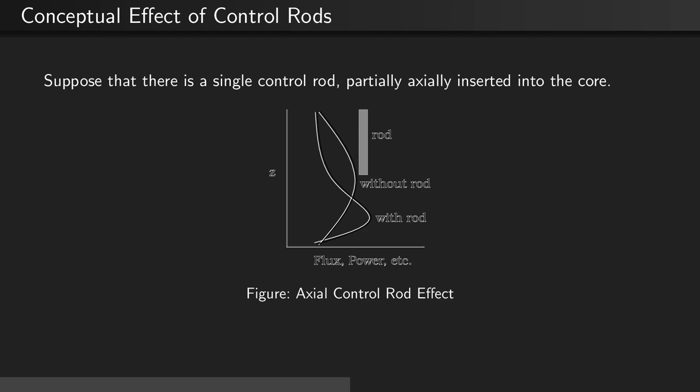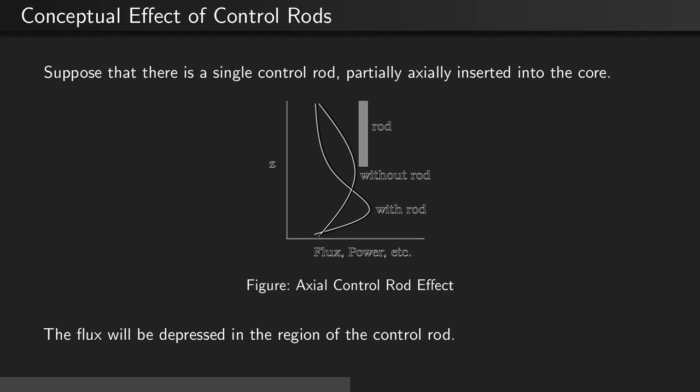Suppose that there is a single control rod partially axially inserted into the core, as seen in this figure. The flux will end up being depressed in the region of the control rod, as opposed to if the rod was fully withdrawn from the core.